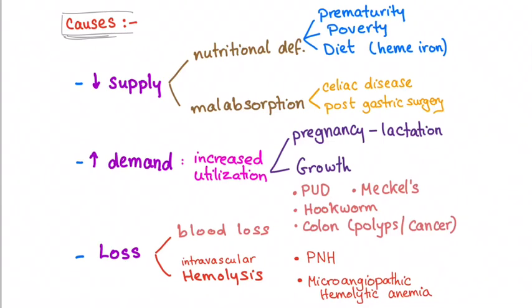The causes of iron deficiency anemia are decreased supply, increased demand, or loss.